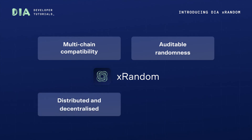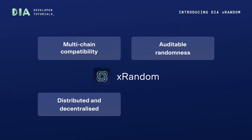Third, distributed and decentralized: DRX Randomness leverages DRAND, a distributed beacon generated by a network of participants named the League of Entropy, or LOE. As DRAND is not singularly controlled by any of its members, there is no single point of failure, and none of the operators themselves can bias the randomness generated by the League of Entropy.